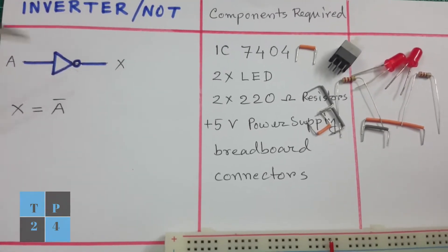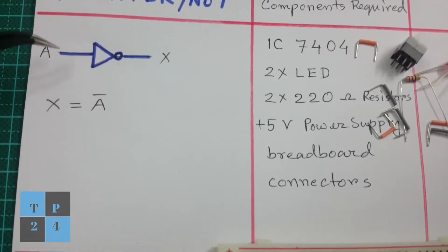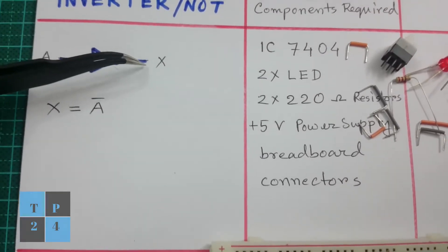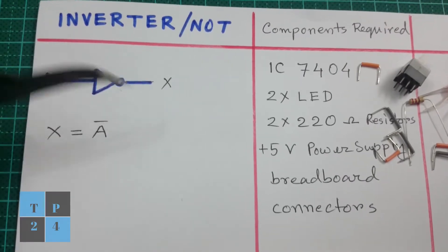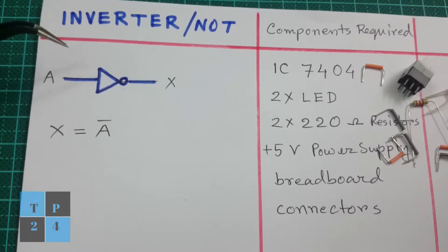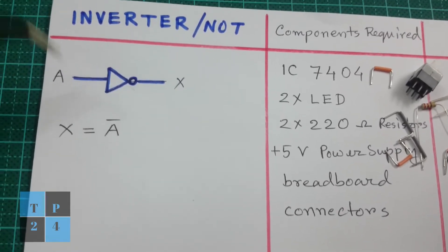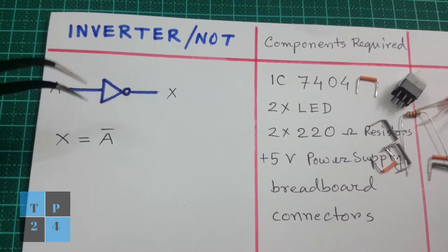This is the symbol of inverter. This is the input and this is the output. If I give high input here, we will get low output. If we give low input here, we will get high output. That means it will invert the logic level from high to low or low to high. This is the basic phenomenon of the inverter or NOT gate.